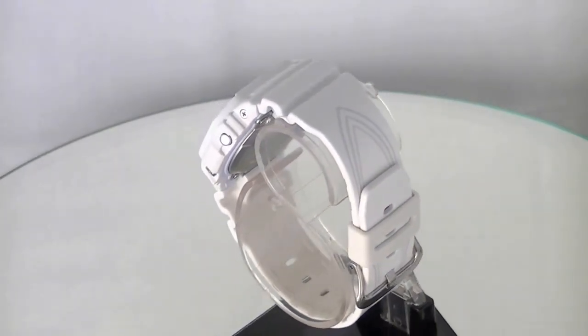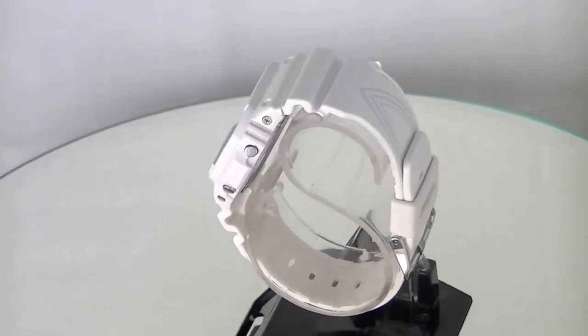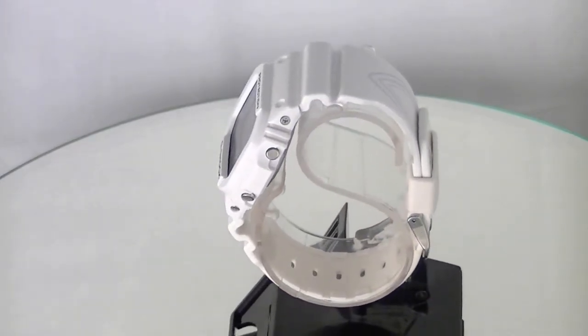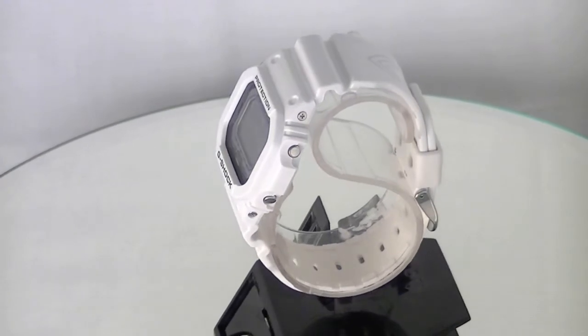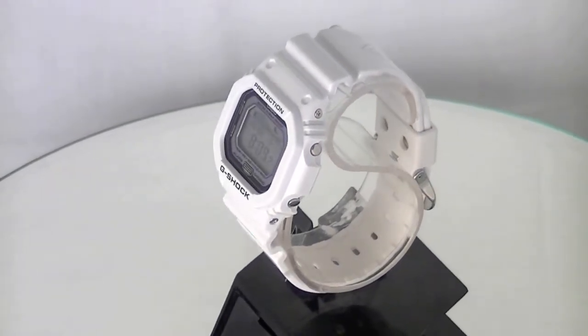Fast forward to today, almost all Casio G-Shocks have some kind of stopwatch feature, countdown timer, backlight, or water resistance that has been derived from its original model from 1983.